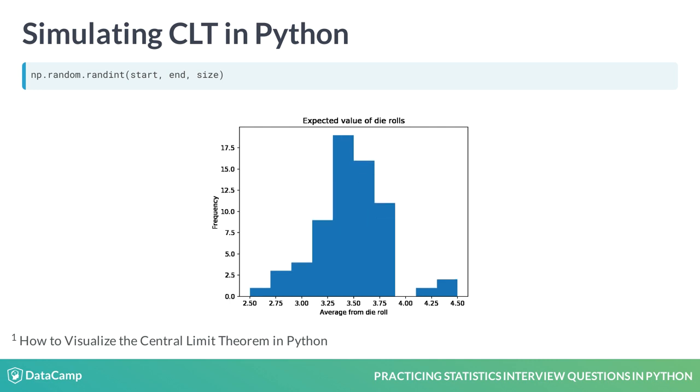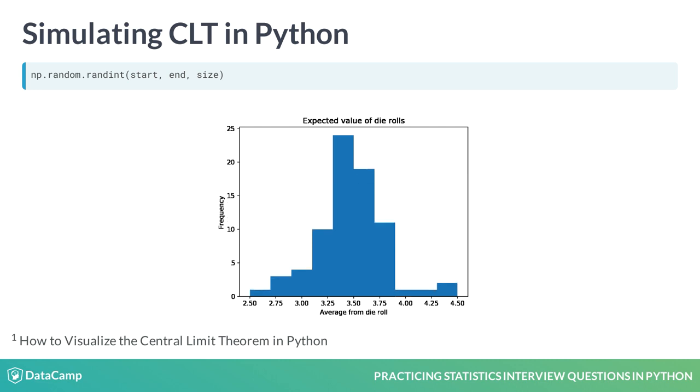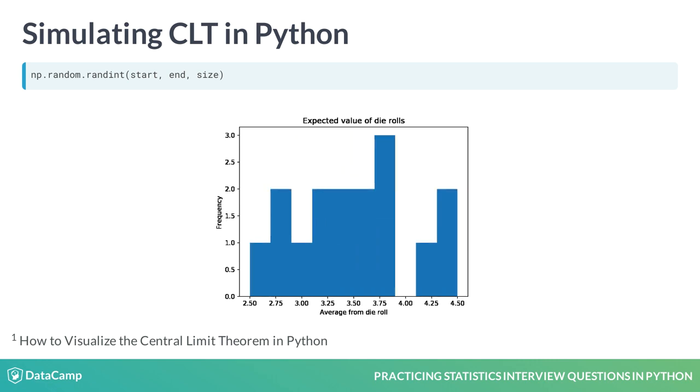The sample means don't look like much at first here, but they slowly become more and more normal around the true mean of 3.5, thanks to the Central Limit Theorem at work. This simple matplotlib histogram shows only rolls 1 through 100, but you can imagine how this would continue if we upped the number of trials.